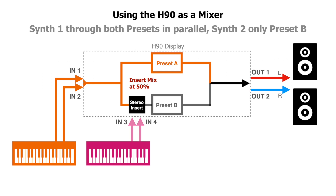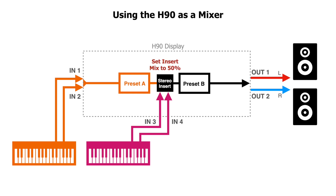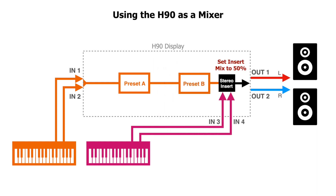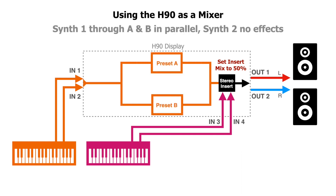If we move the stereo insert to the front of one preset, synth 1 will go through both presets in parallel while synth 2 will only be processed by a single preset. By setting the insert mix to 100%, it's possible to process each instrument with its own algorithm — this cuts off the split signal from the first synth and directs it only to preset A, while the second synth only goes through preset B. If we place the stereo insert between presets and set the mix to 50%, we can process synth 1 through presets A and B in series and synth 2 through preset B only. Placing the stereo insert at the end of the chain prevents synth 2 from being processed at all.